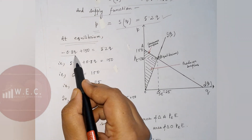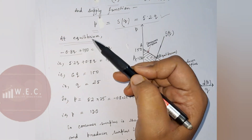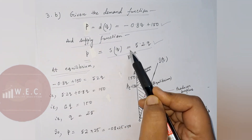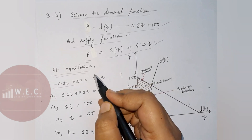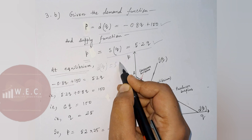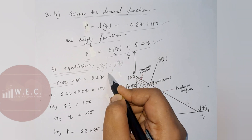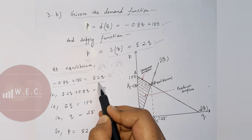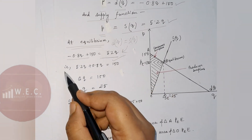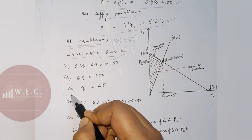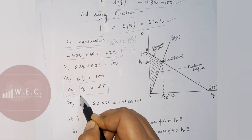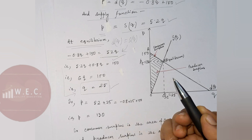At equilibrium, demand equals supply, that is: minus 0.8q plus 150 equals 5.2q. Solving this equation we can get the equilibrium quantity and equilibrium price. The equilibrium quantity is q equals 25 units, and the equilibrium price is 130 rupees.